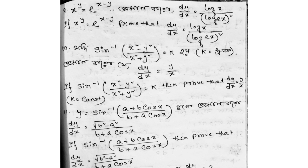Question 8: sin inverse ((x squared minus y squared) divided by (x squared plus y squared)) equals k, find dy/dx equals y by x. Question 9: y equals sin inverse ((a plus b cos x) divided by (b plus a cos x)) — prove that dy/dx equals root over (b squared minus a squared) divided by (b plus a cos x).